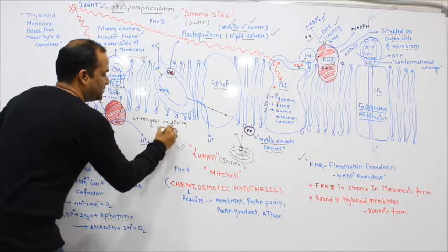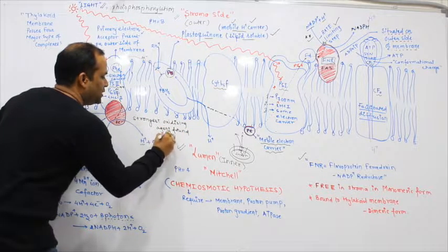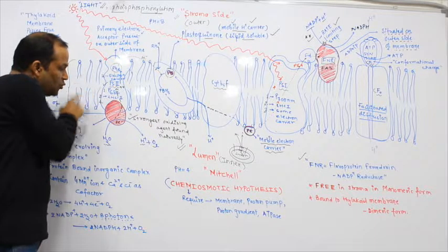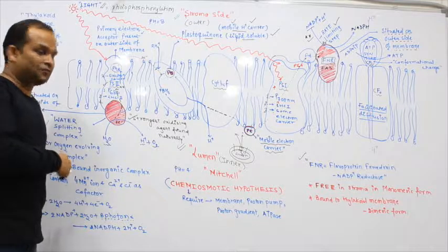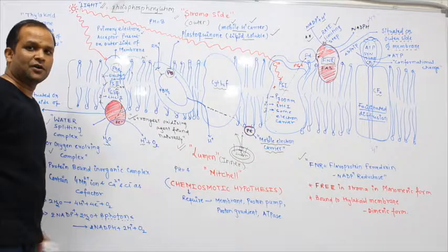PS2 is considered the strongest oxidizing agent found naturally. The removal of electrons is called oxidation. This leads to the photolysis of water.